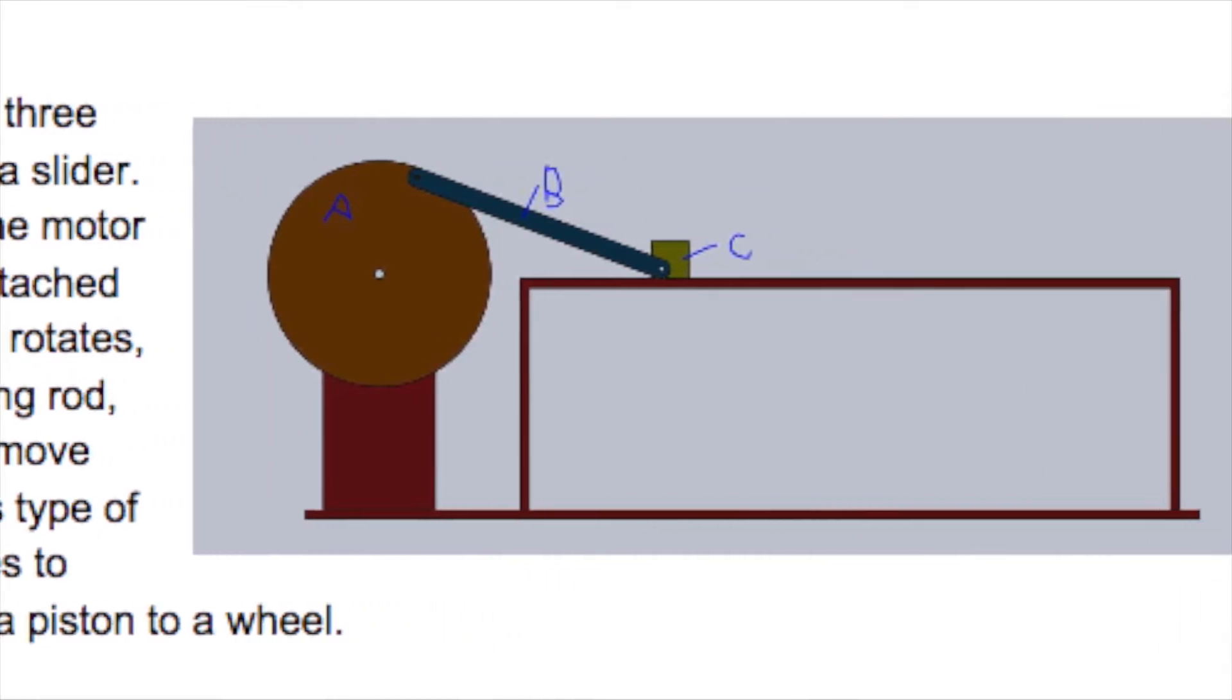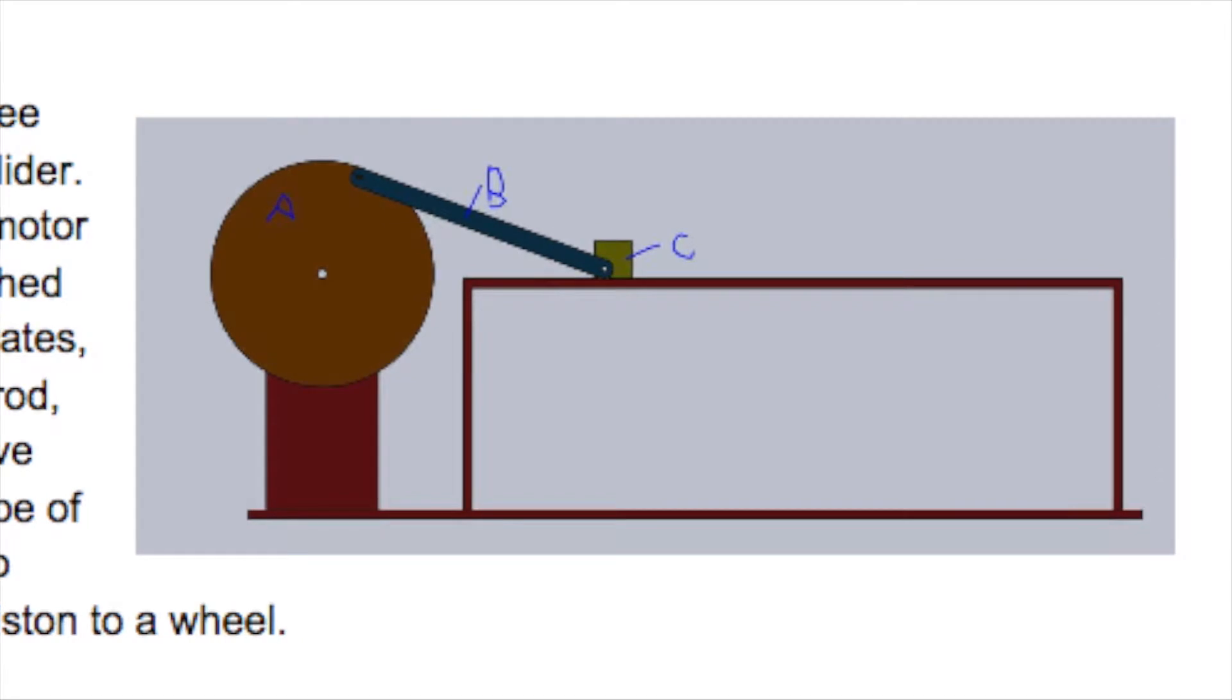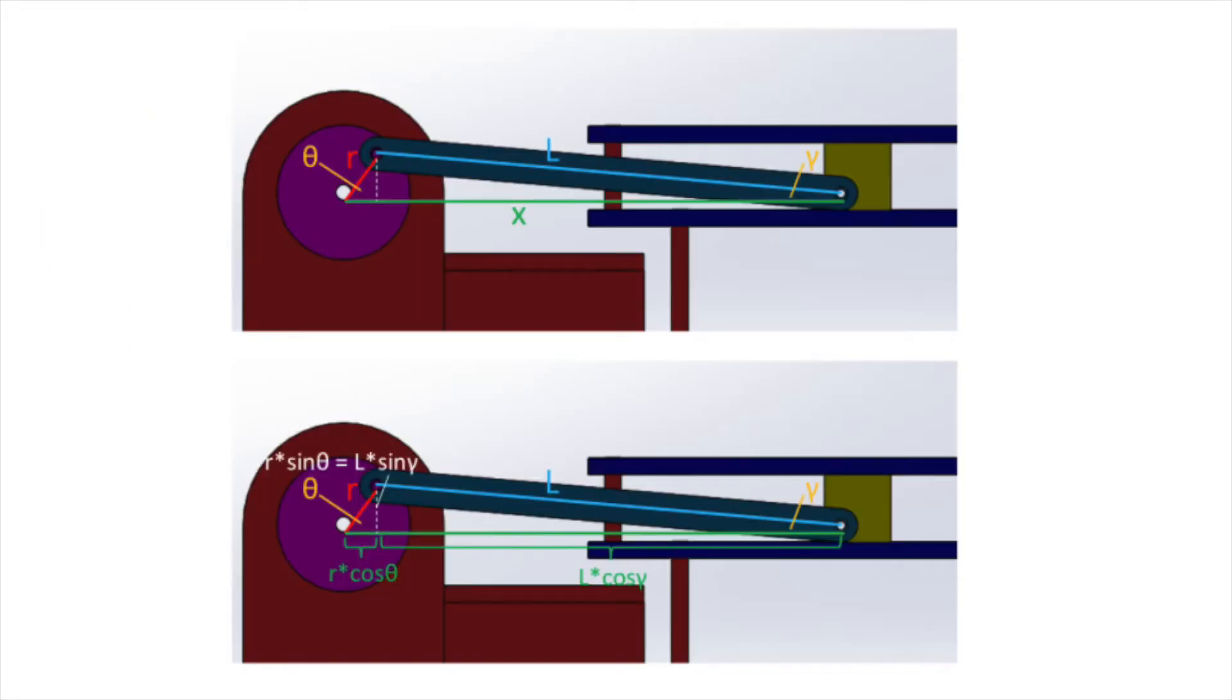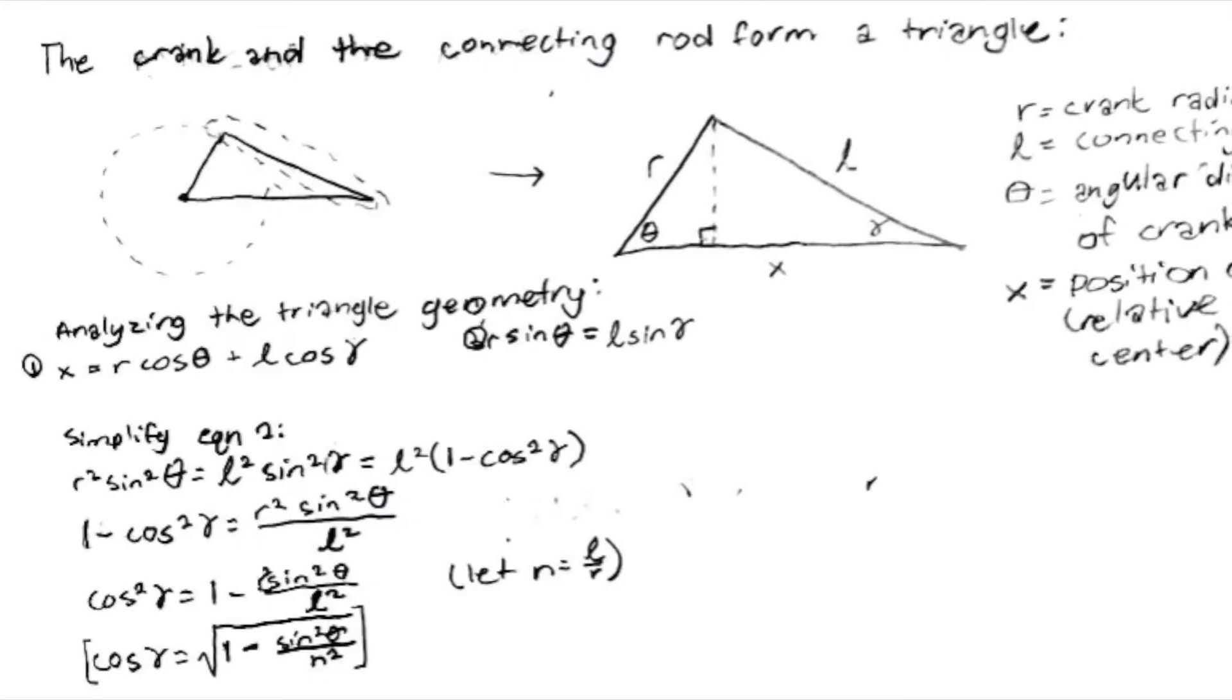The slider has an acceleration that can be read by the accelerometer. We first tried to analyze the forces by looking at the movement of each individual part, but we found it easier to look at the displacement geometrically. As you can see in this diagram, the crank, connecting rod, and slider form a triangle.